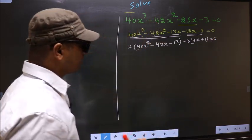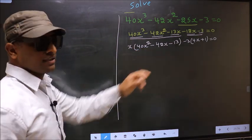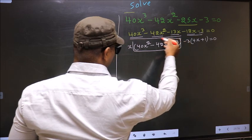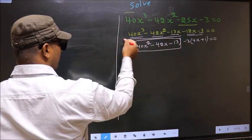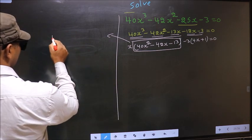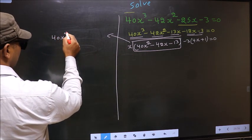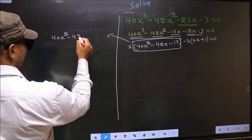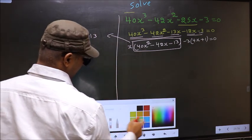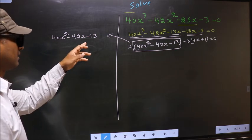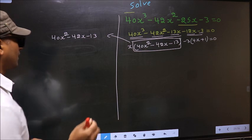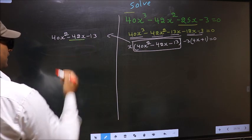Now, in this equation we have a quadratic, so I will factorize this quadratic. That is 40x² minus 42x minus 13. To factorize this, we should split the middle term, that is minus 42x.